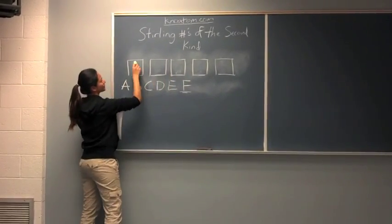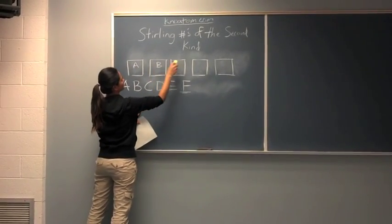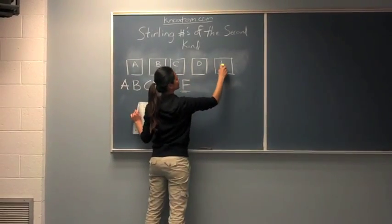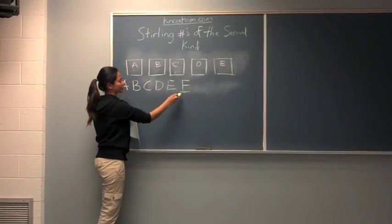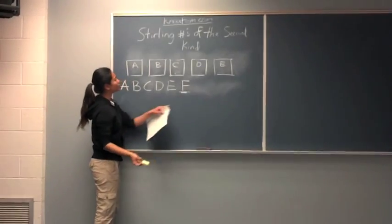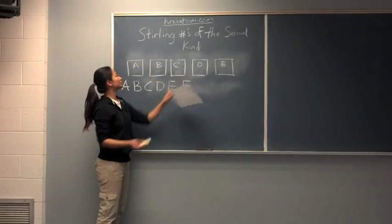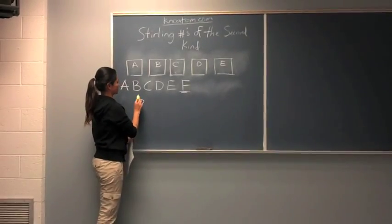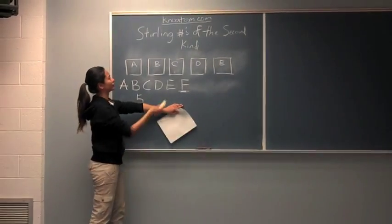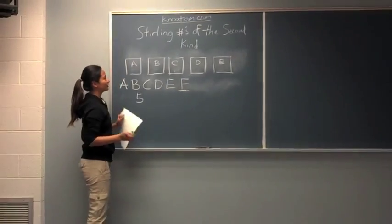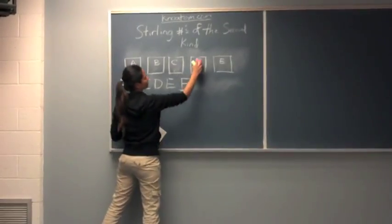we'll start with putting A in the first room, and then B, C, D, and E. Now, we'll let this person F, and we can put it in any rooms here. So, we have 5 choices to put F in any rooms here.